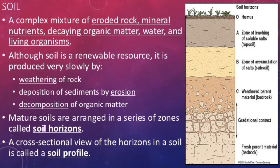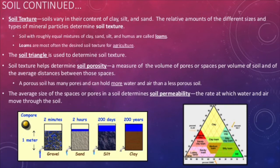Soils that are well established have what is known as a soil profile. If you were to take a core sample of the soil, it would have the expected layers, or soil horizons. We can characterize soils based off of their texture. Soil texture is determined by the amount of sand, silt, and clay it contains. We can use what is known as a soil triangle to help us characterize it.